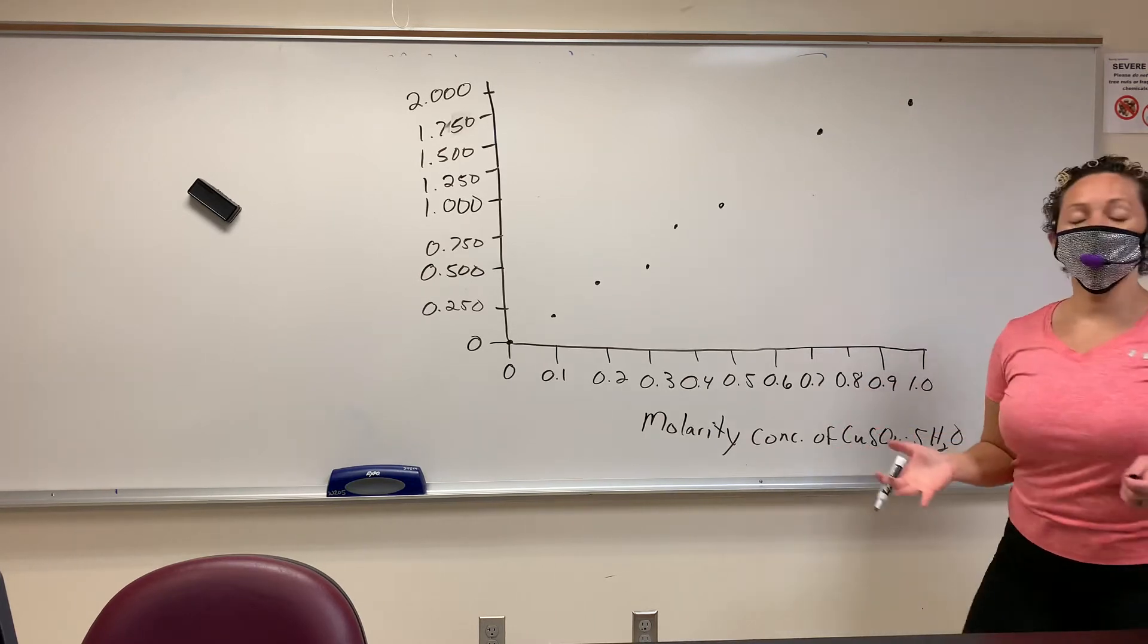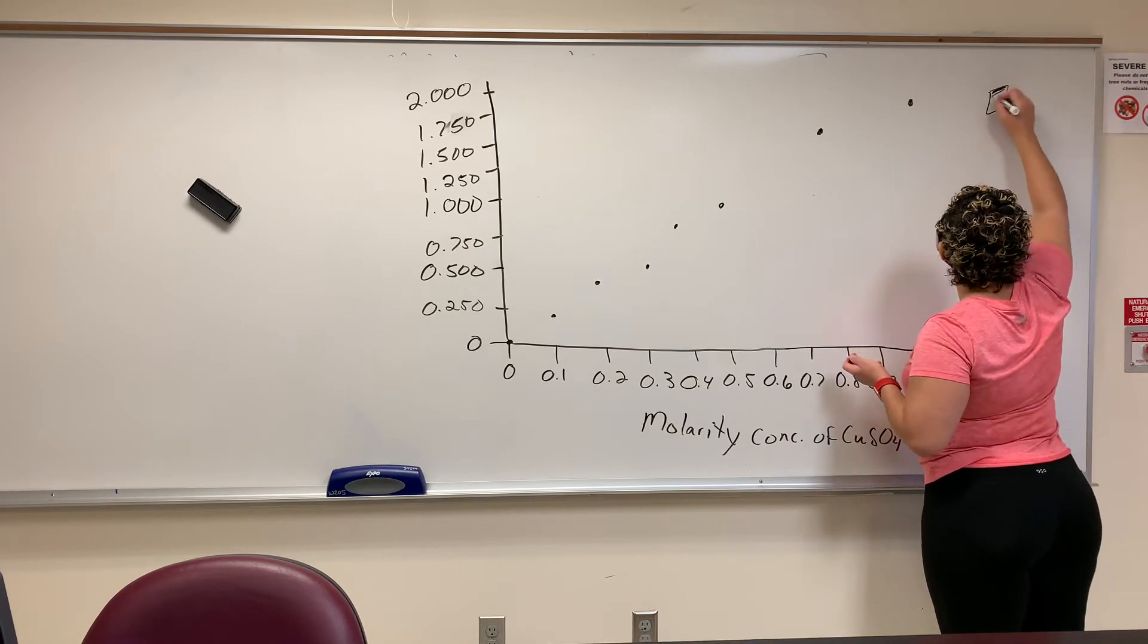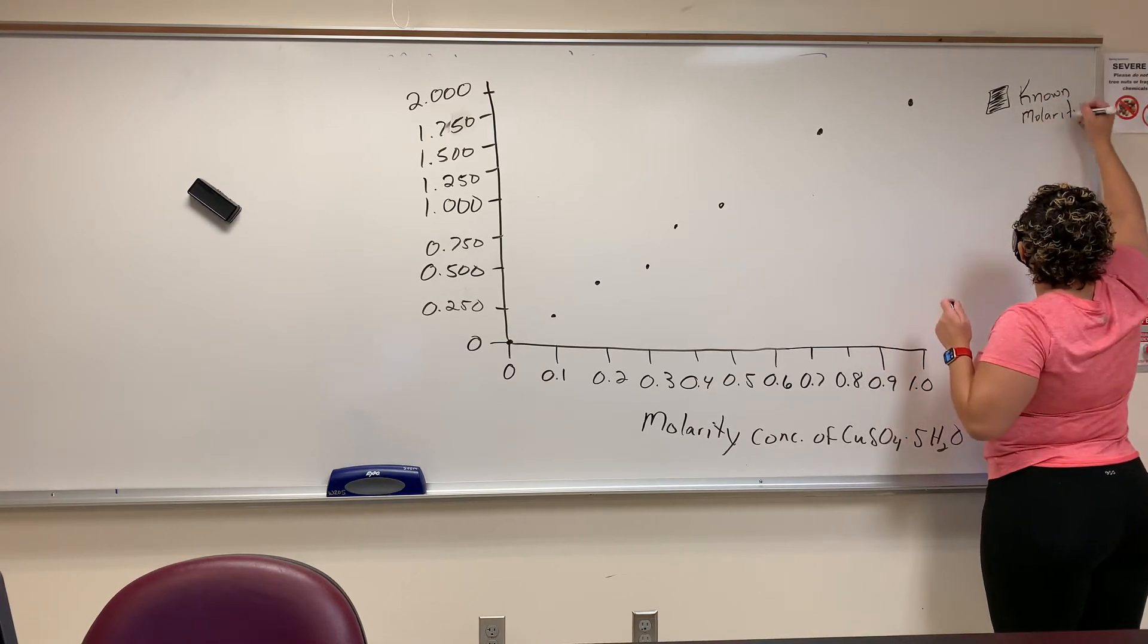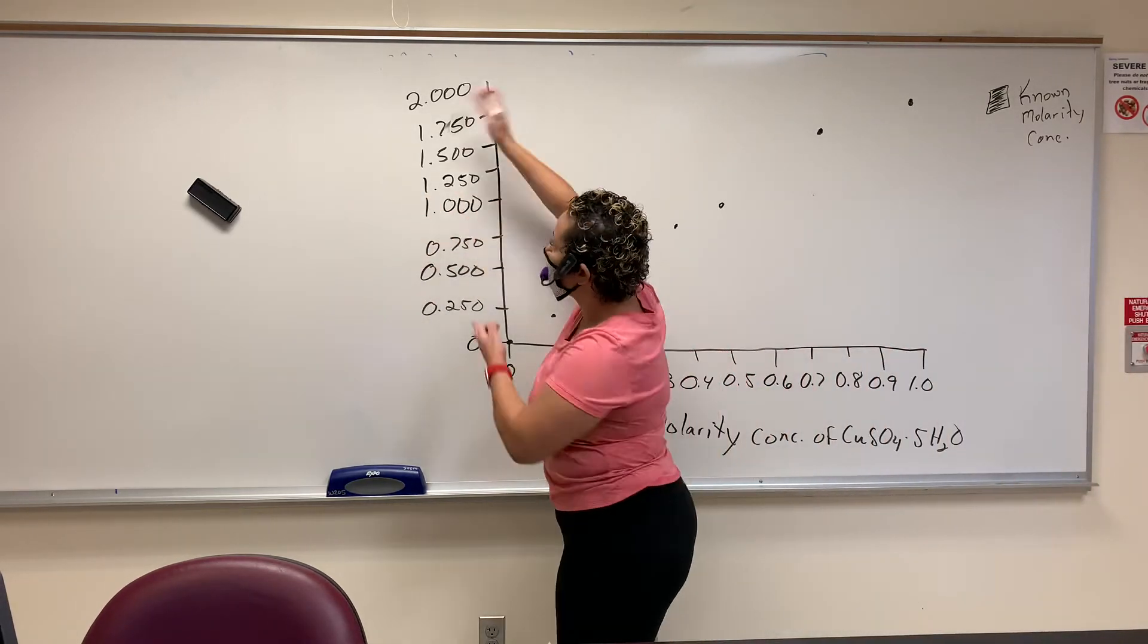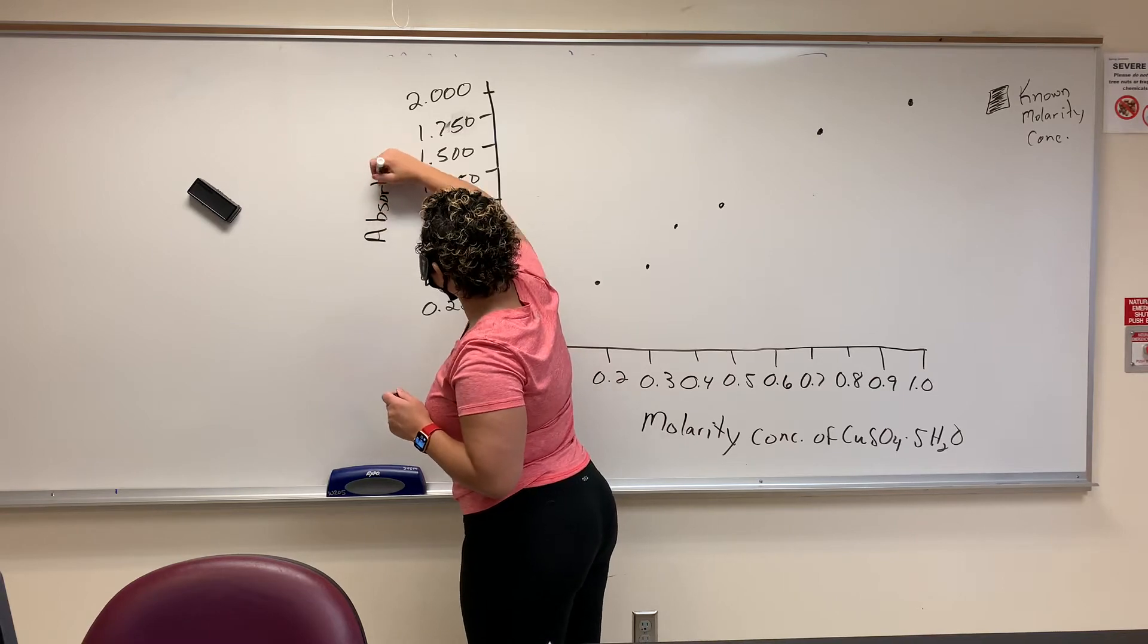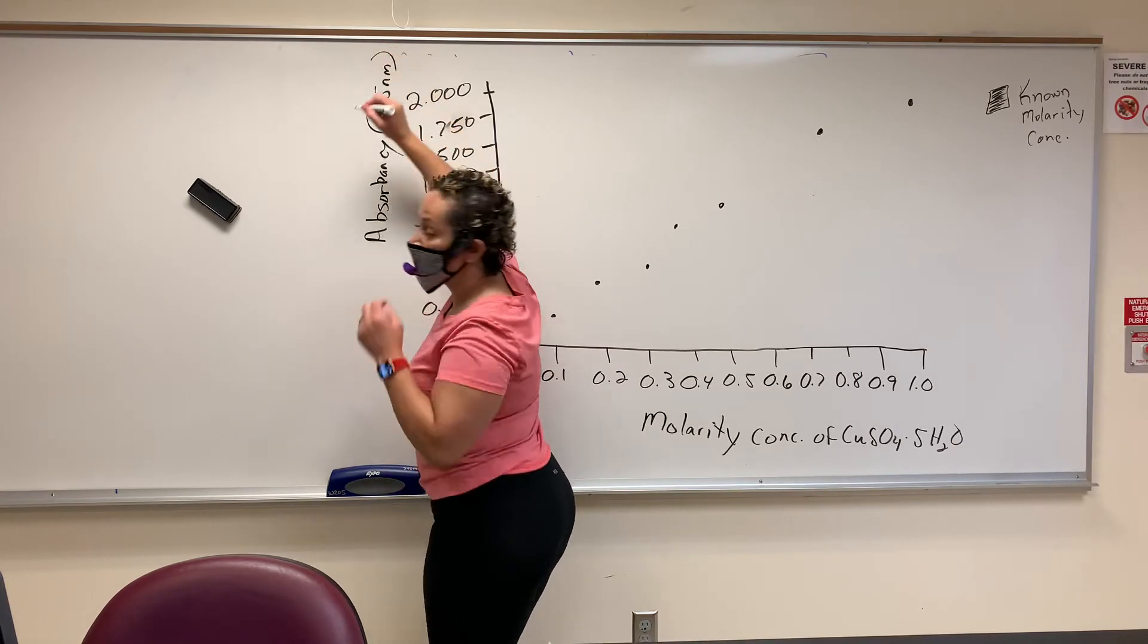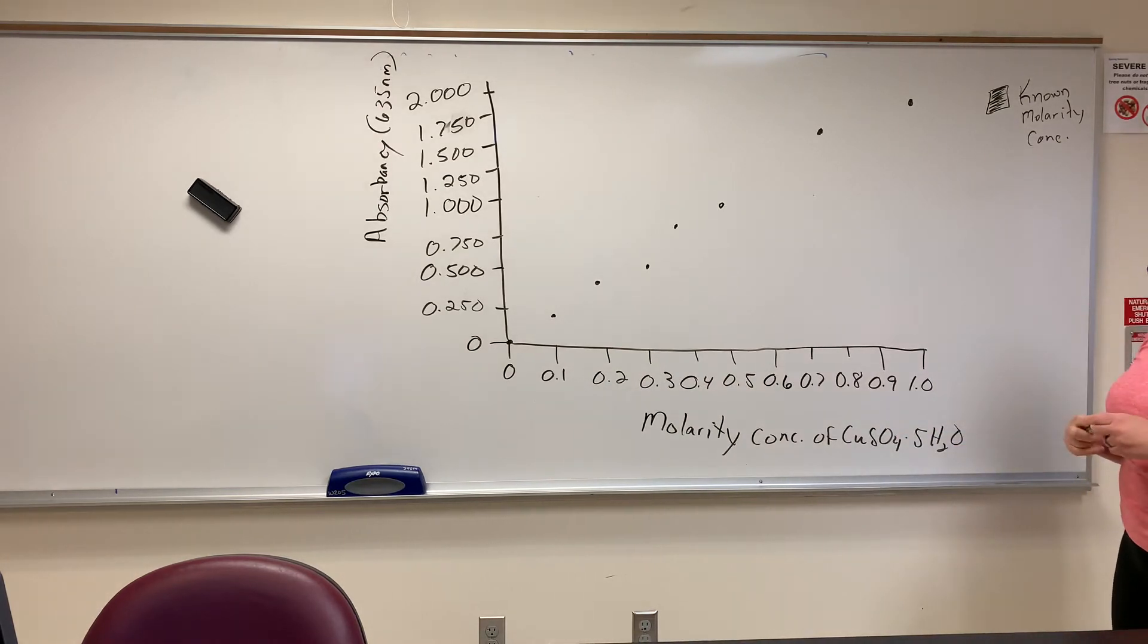So what I did is I just plotted known data. Let's put that on the key. Black known molarity concentrations. Oh, I forgot a label over here. Now that we got these numbers, absorbance at 635 nanometers. I'm giving you all kinds of good stuff.